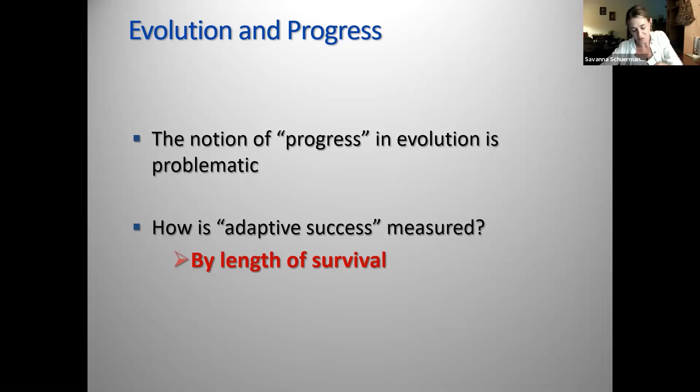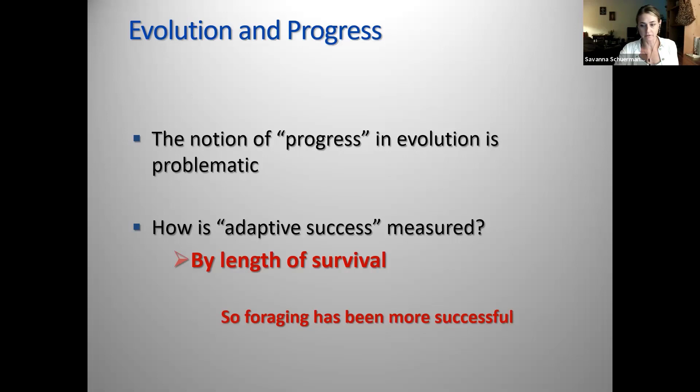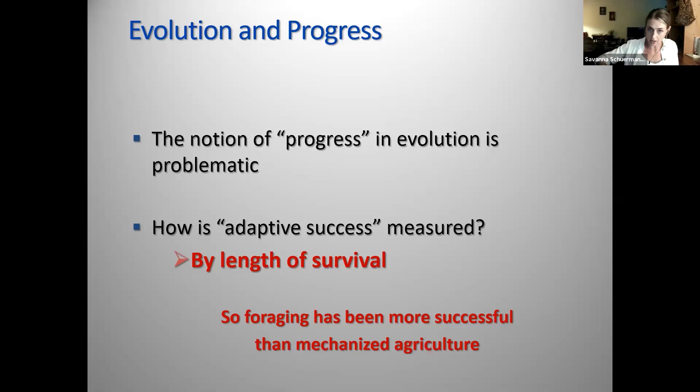From this perspective, foraging — the tribal world — hunter-gatherers have been much more successful than mechanized agriculture in industrial societies. Foraging has been around all of our existence. Mechanized agriculture has been around only a couple hundred years — not even a dot on the page yet. And we're already seeing massive, potentially adverse consequences.